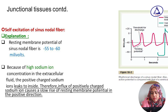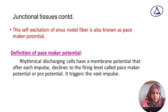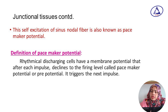This figure shows the resting membrane potential of the SA node is minus 55 to minus 60 millivolts. When this threshold level reaches minus 40 millivolts, it causes the action potential. This self-excitation of the SA node fiber is also known as the pacemaker potential. Rhythmically discharging cells have a membrane potential that, after each impulse, declines to the firing level — this is called the pacemaker potential. It triggers the next impulse.